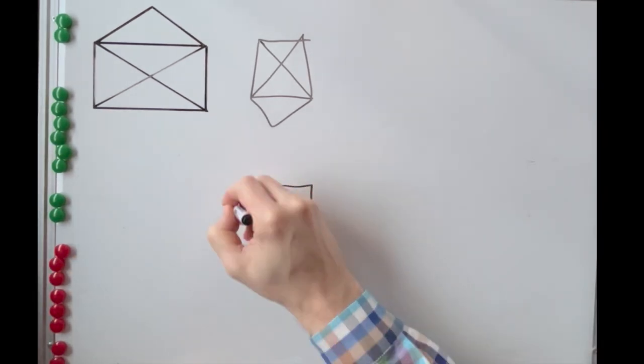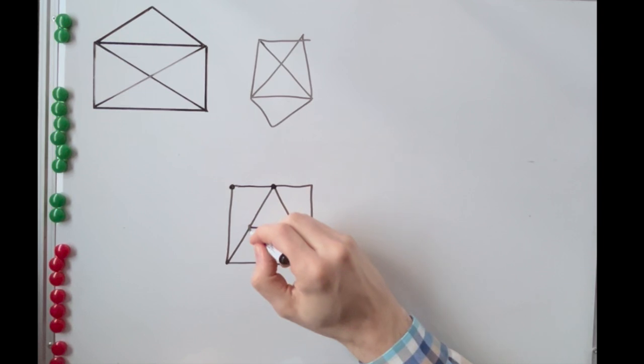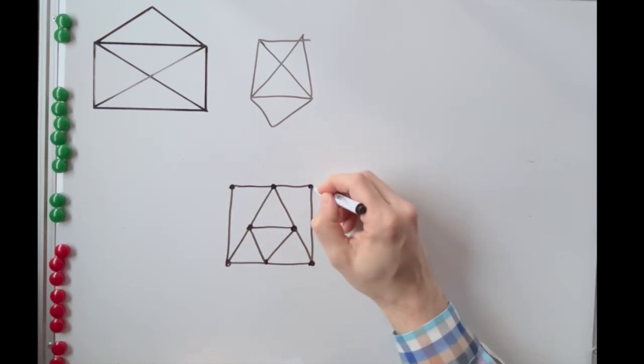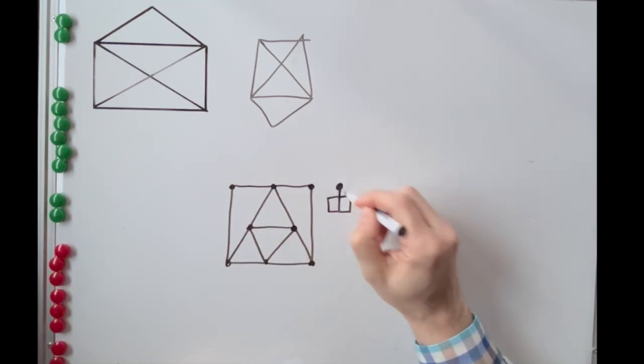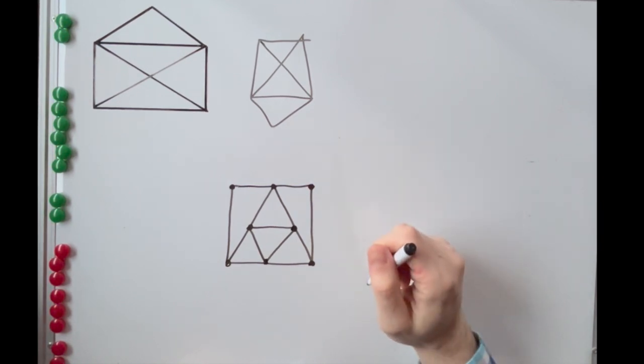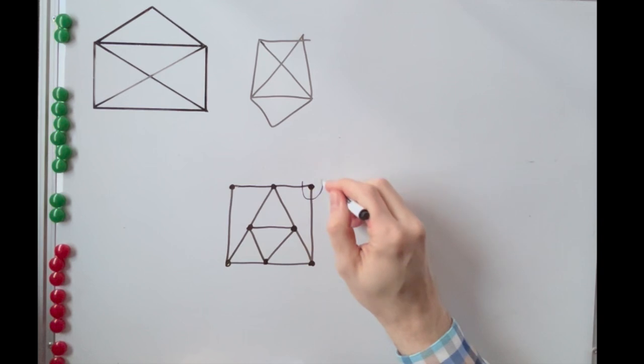When we talk about nodes, we mean points where at least two lines meet or where a single line ends. Analyzing these points lets us quickly determine whether a shape can be drawn without lifting the hand. But let's immediately look at those places.